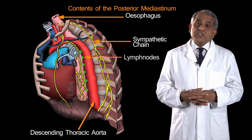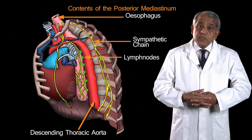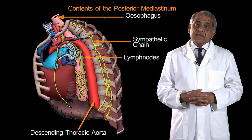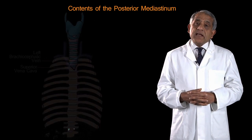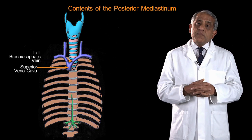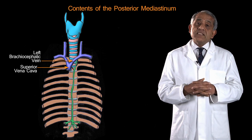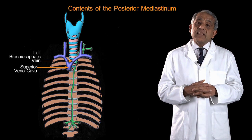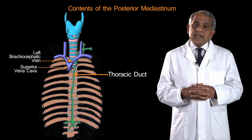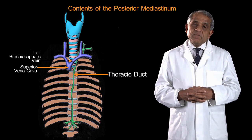There are lymph nodes in the posterior mediastinum — in fact, quite a profusion of lymph nodes. Also running up the posterior mediastinum from below upwards is the thoracic duct, a large and very important lymphatic channel.